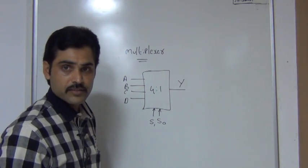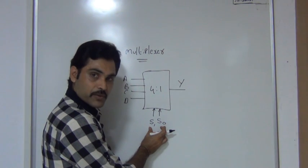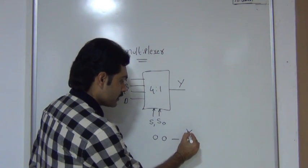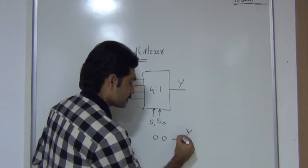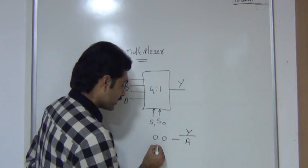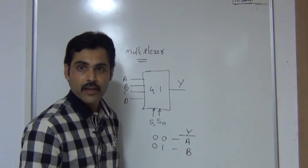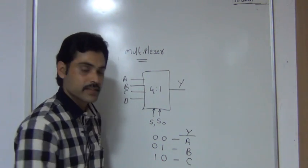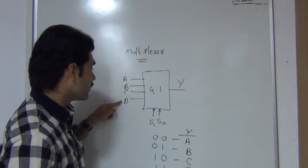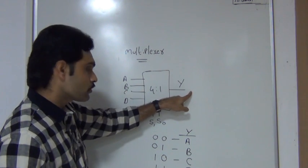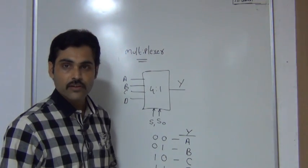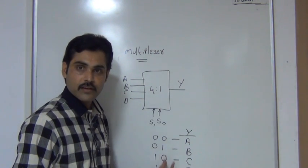For this 4-to-1 multiplexer, if the 2 selection lines are kept at 0, 0, my output is nothing but the first input value — a value will go to the output. If I take selection line 0, 1, I will get b value. If I take selection line 1, 0, my output is c. If my selection line is 1, 1, my output is d. So a, b, c, d are the 4 inputs, and any one of the inputs will go to the output depending on the selection. This is the block diagram and truth table of the 4-to-1 multiplexer.